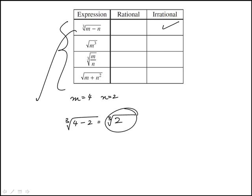Look at the second one, this would be square root of m cubed, 4 cubed. 4 cubed is 64, that's 8, so that's rational.